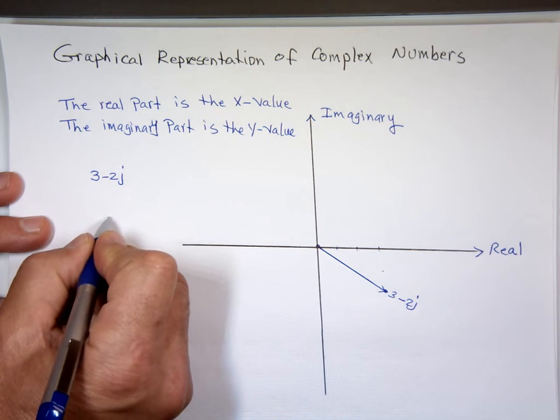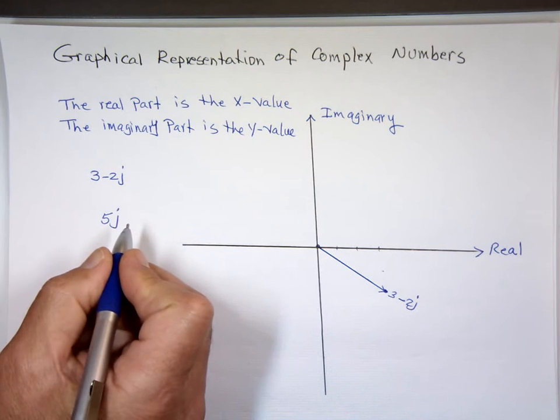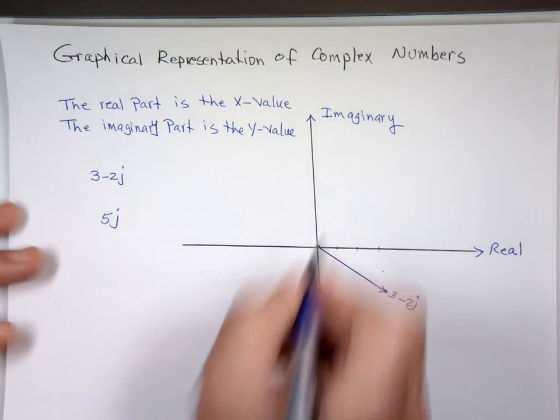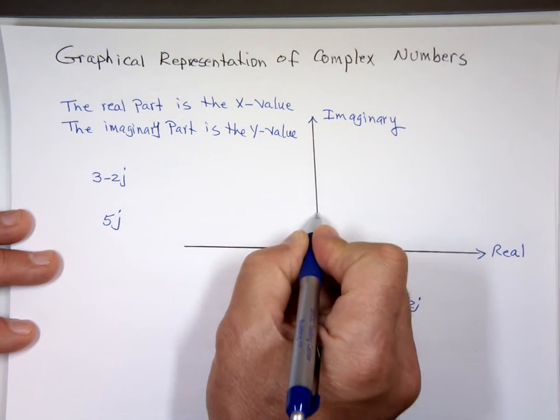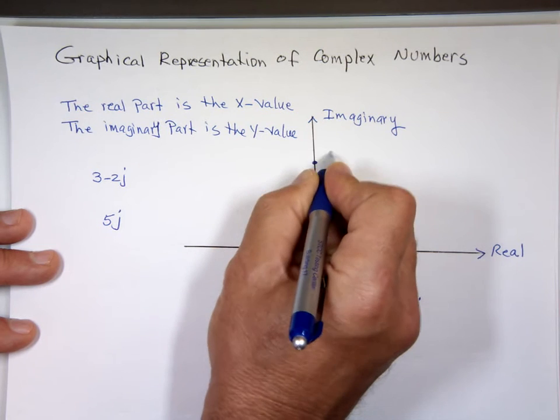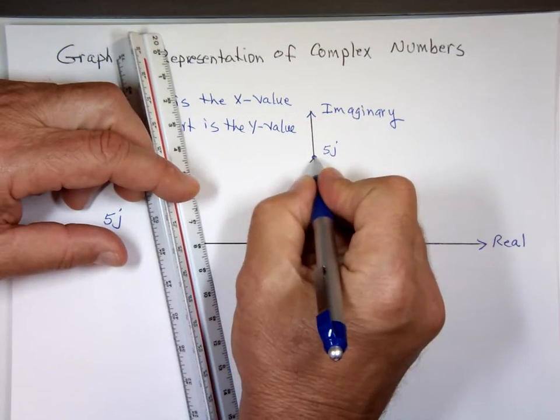If I want to graph 5j. What is 5j? What does that vector look like, that graph look like? Notice that's imaginary only. There's no real portion. It's plus, you go up 5 units. 1, 2, 3, 4, 5. That's the 5j.